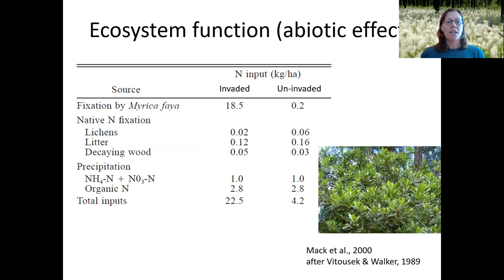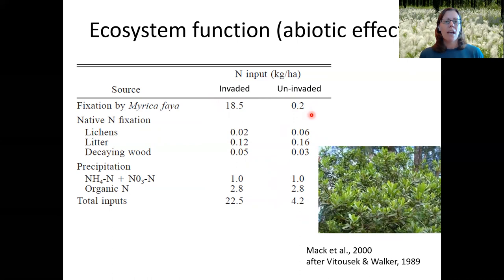Myrica faya — the fire tree in Hawaii — is native to the Azores, also a volcanic island, and happens to be a nitrogen-fixing tree. In areas invaded by this species, nitrogen input is much higher than in uninvaded areas, cascading to create large amounts of soil resources that are mainly exploited by other invasive plants.